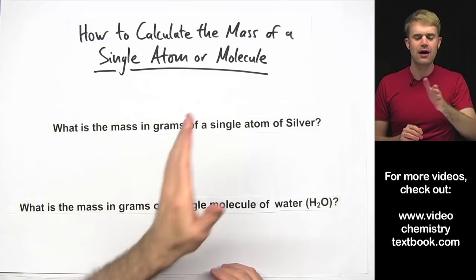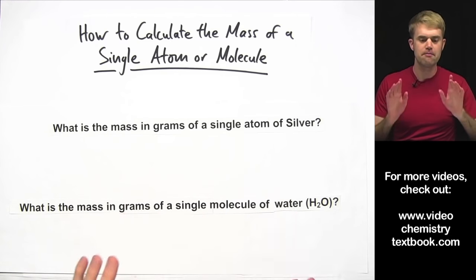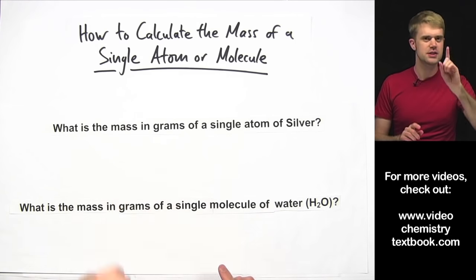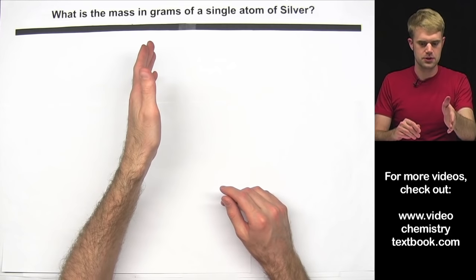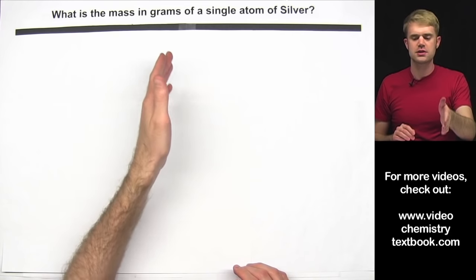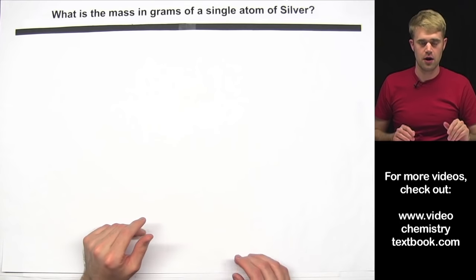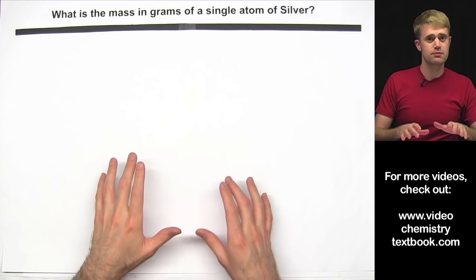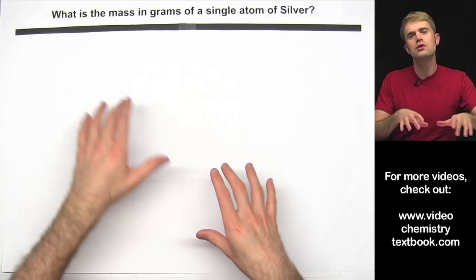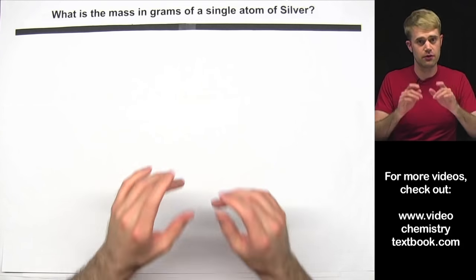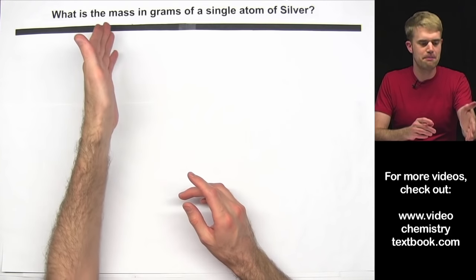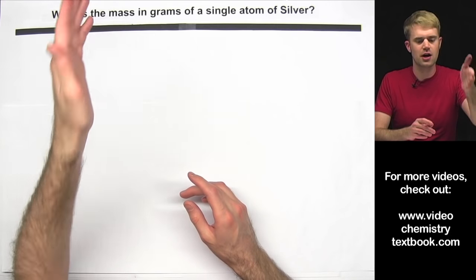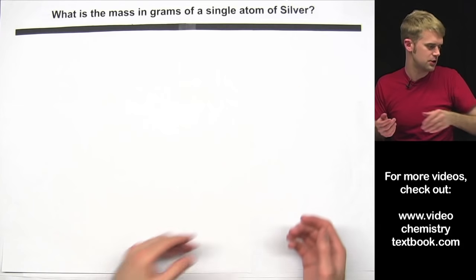In this video we're going to learn how to calculate the mass of a single atom or molecule. The question is: what is the mass in grams of a single atom of silver? To solve this problem we're going to have to pull in a few different pieces of information about moles. The first is going to be about mass, because we're talking about the mass of silver atoms here.